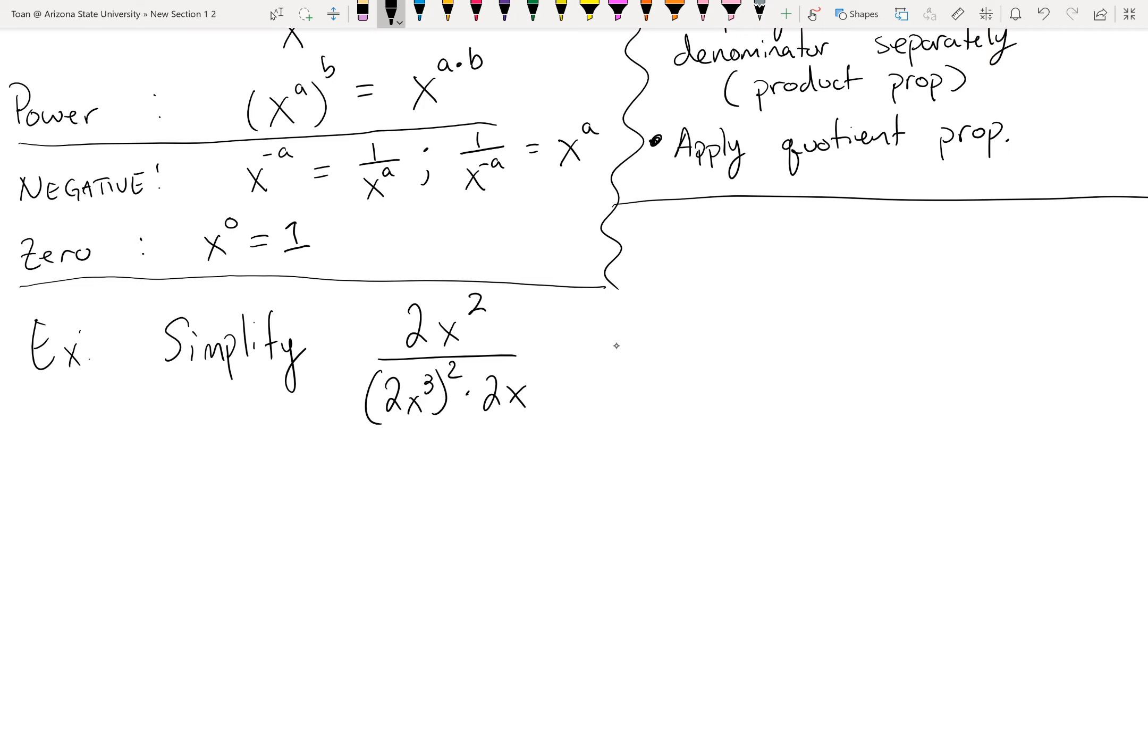Now a common mistake students make is with regular numbers - they take this 2 and multiply that 2. You're not supposed to do that. These guys are exponents here, so there's really an exponent of 1 which you're going to have to distribute to. Here's another suggestion: any part of the problem that you're not working currently, just copy them down. So I'm going to copy down the 2x² because I'm not doing anything. Then I'm going to distribute this exponent of 2, so that gives me 2² x⁶ times 2x.